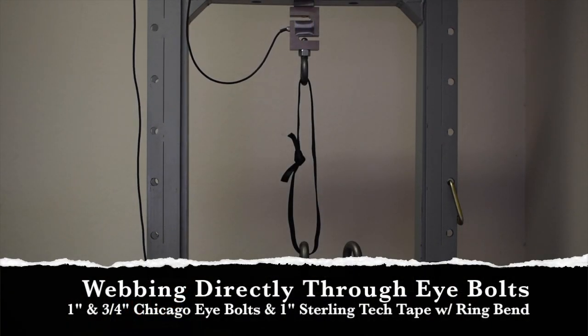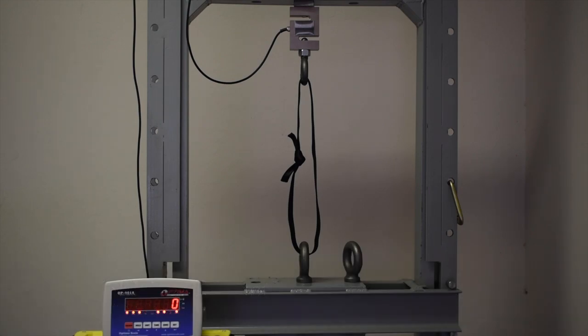Alright, for this test we rigged the webbing just in a loop with a water knot directly through the two Chicago I-bolts. They might have a little more surface area, and we'll just see how that affects the test, if any.